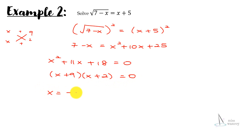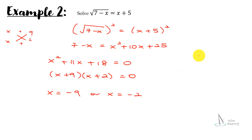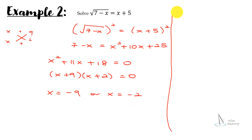This gives x equal to negative 9 or x equal to negative 2. Every time we have two answers, we need to check whether we accept both or only one of them.